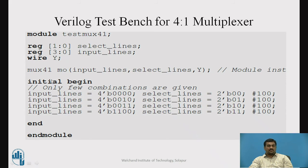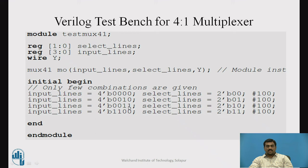We are going to write the initial begin statement. The initial block starts with initial, and since there are multiple statements we enclose them inside the begin and end block. The first input combination: input_lines is defined as a 4-bit binary number 4'b0000 and select_lines as 2'b00, with a delay of 100 units. Only a few combinations are shown due to space limitations — in your actual program you can take all possible input combinations to verify the correctness of your model. The begin block ends with the end keyword and the test bench module ends with endmodule.